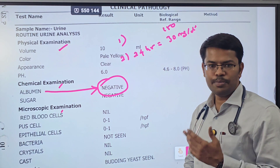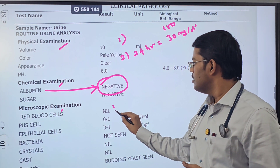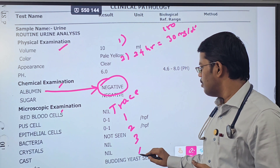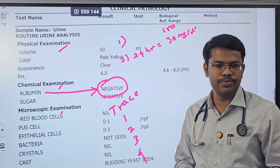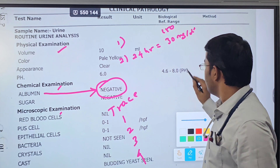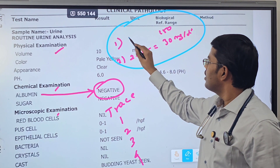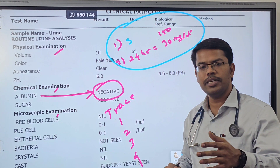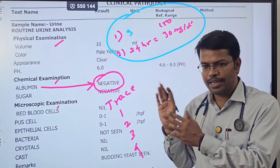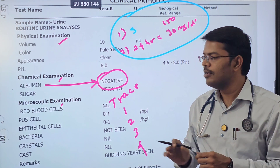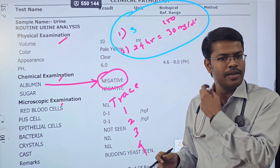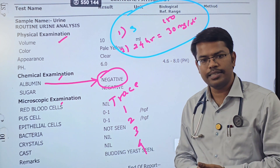What other reports are possible? It can be negative, trace, 1+, 2+, 3+, or 4+. This is the normal parameter. We are getting a semi-quantitative approximate value — 24-hour urinary protein is 150 mg/dL and albumin is 30 mg/dL. Here we estimate proteinuria only approximately.